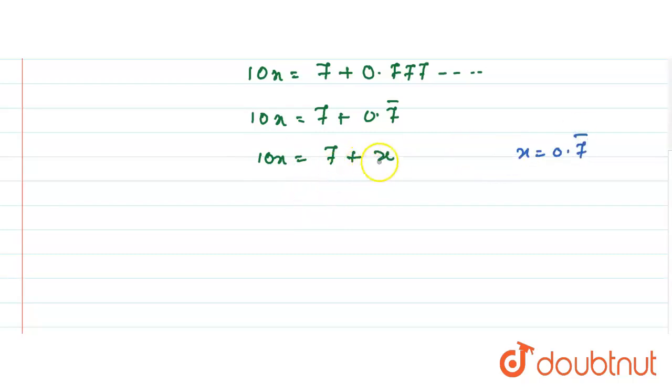Now just subtract this x from 10x. So this is 10x minus x is equal to 7. So this is 9x is equal to 7, and from this what I have, x is equal to 7 by 9.